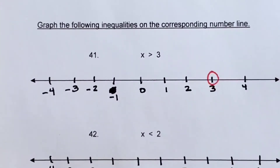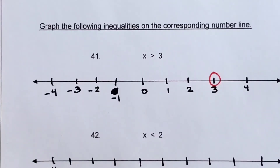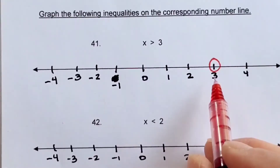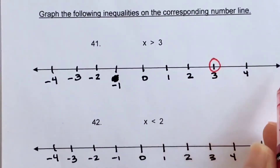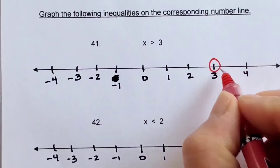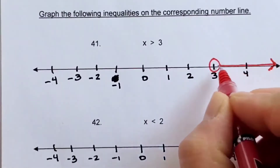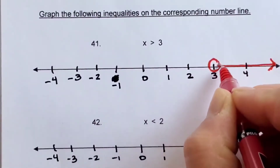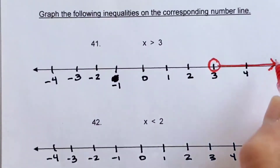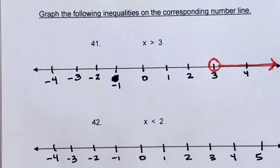Numbers 41 through 45 will be graphing inequalities. Number 41 says x is greater than 3. Find your 3 on the number line. It's greater than 3 — it doesn't equal 3 — so you're going to have an open circle. Everything greater to the right will be your line — an open point and a line with an arrow, going infinitely greater than 3.